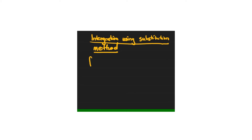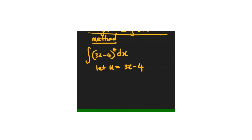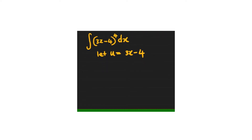For the first question, I'm going to give you the integration of (3x − 4) to the power of 4 dx. We want to make use of substitution, so we let u equals 3x − 4. That's why some people call it the u-method. We now differentiate it: du/dx equals 3.